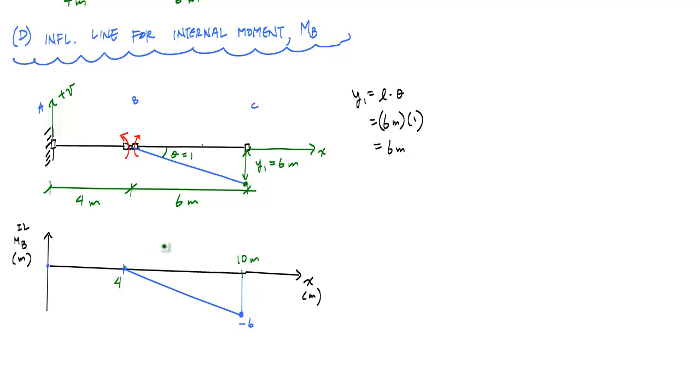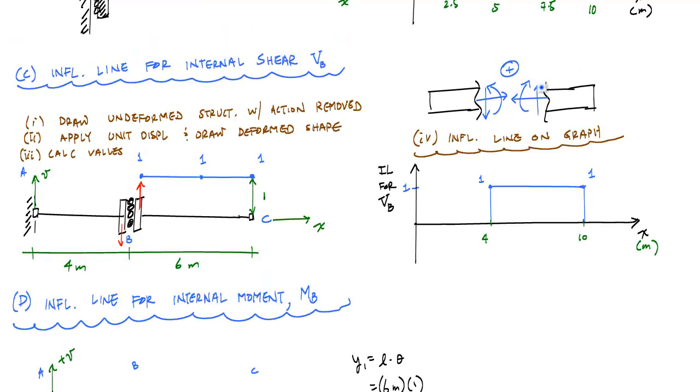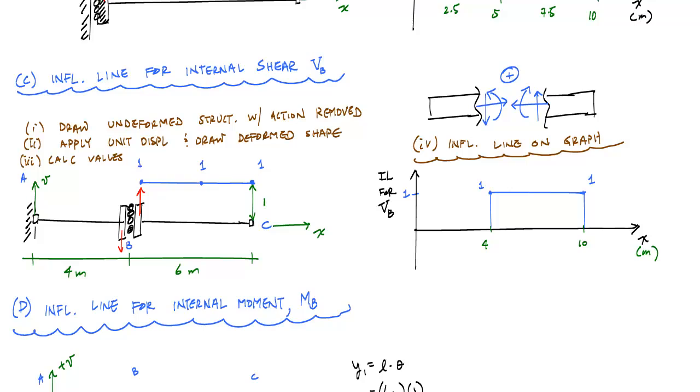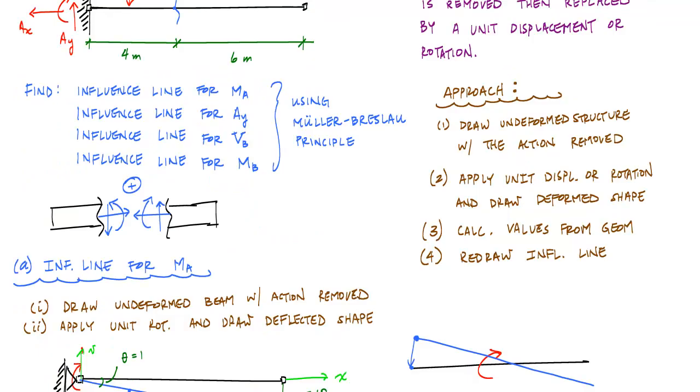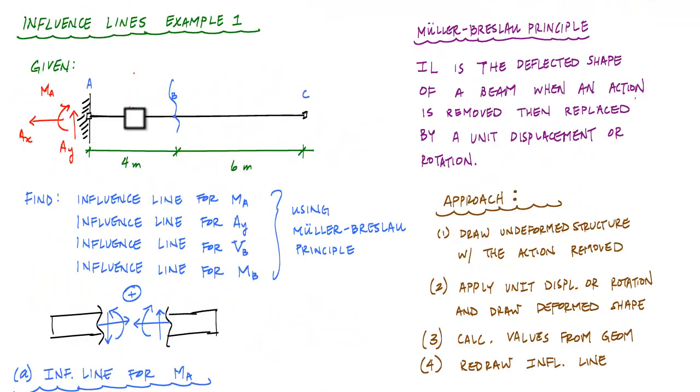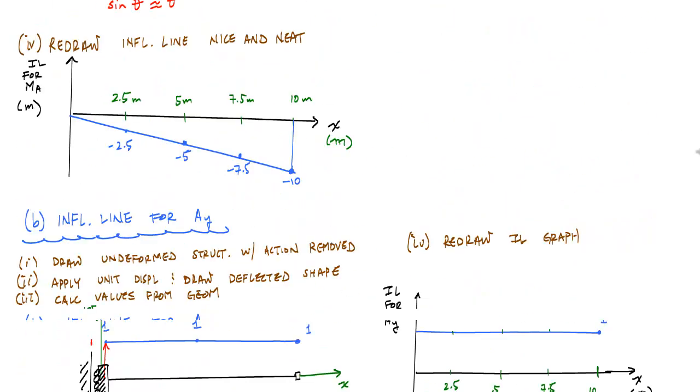So if I'm like halfway through here, at 7 meters, this would be negative 3. And the negative makes sense because here I have an internal positive moment that says compression at the top, tension at the bottom. But whenever I have my concentrated force past point B, I would have an internal moment at point B where I have compression at the bottom and tension at the top, which would be negative according to our sign convention.